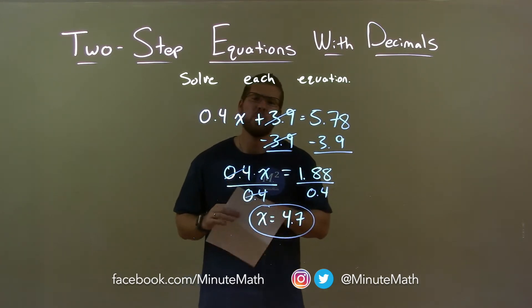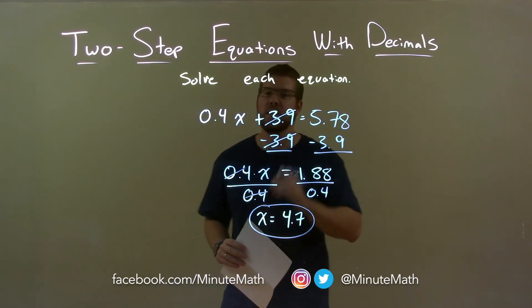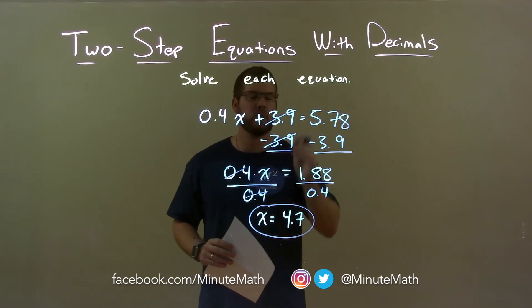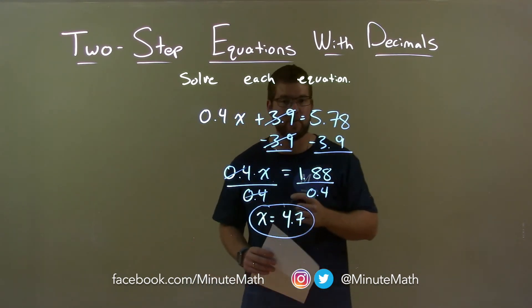Quick recap: we're given 0.4x plus 3.9 equals 5.78 and we have to solve for x. I subtract 3.9 from both sides, then divide both sides by 0.4, giving me my final answer of positive 4.7.